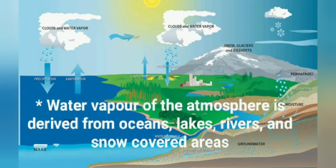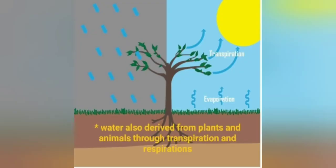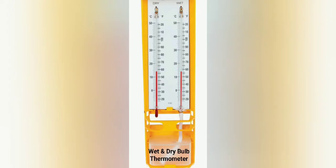Water vapor in the atmosphere is derived from oceans, lakes, rivers, and snow-covered areas. Water is also derived from plants and animals through transpiration and respiration.